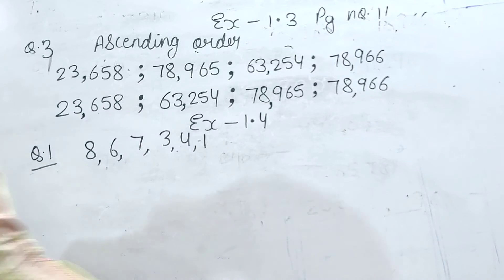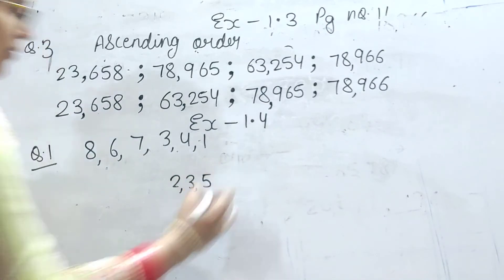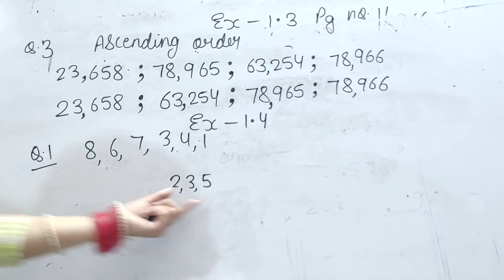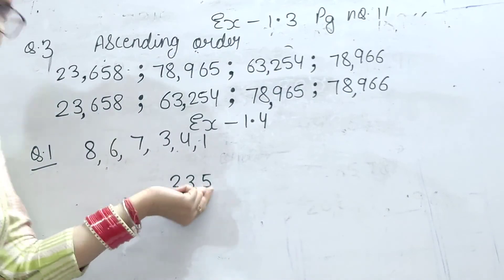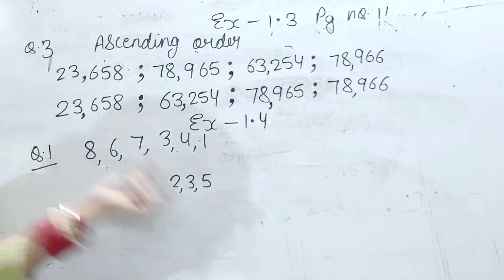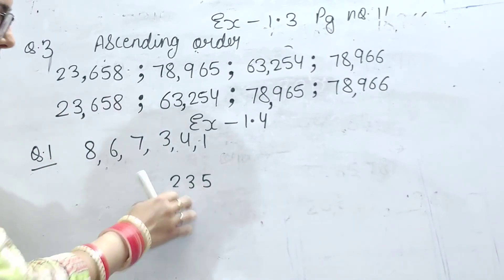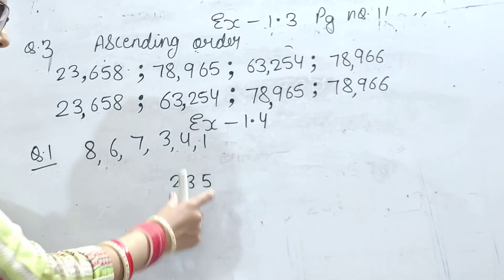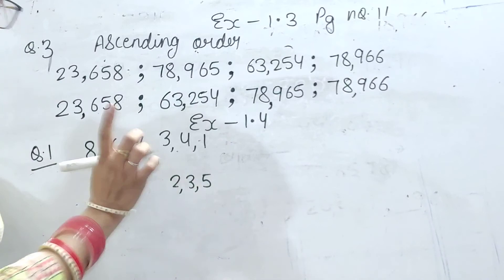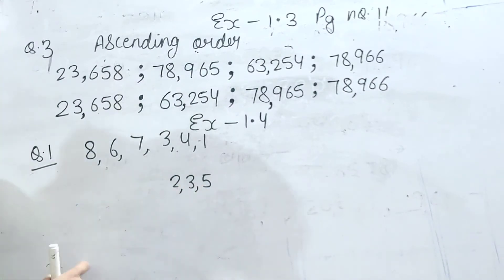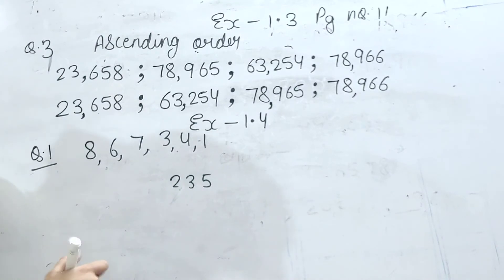Us question ko karne se pehle ek cheez batati hoon. If I am writing 2, 3, 5 — yeh abhi digits hain. Digits aur numbers mein kya difference hota hai? Agar har ek digit ke baad comma hota hai, to yeh digit hota hai: digit 2, digit 3, digit 5. Lekin agar comma hata dein, to yeh number ban jata hai: 235.